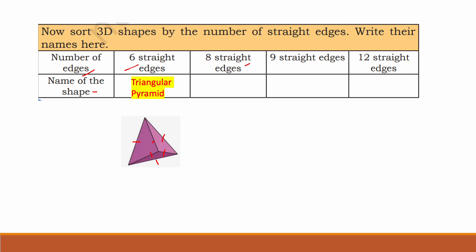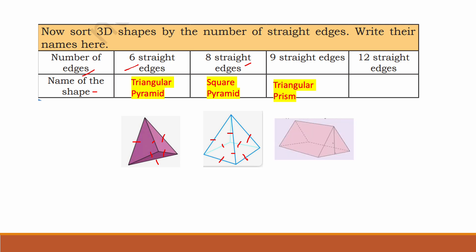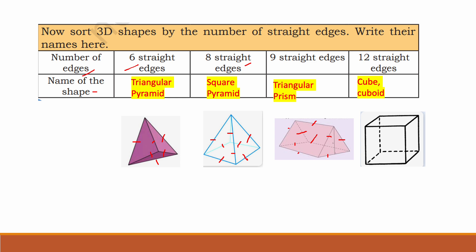A shape with eight straight edges is a square pyramid. A shape with nine straight edges is a triangular prism. A shape with twelve straight edges is a cube or cuboid.